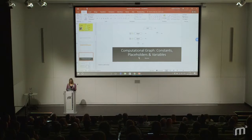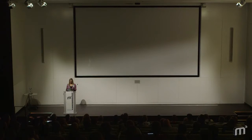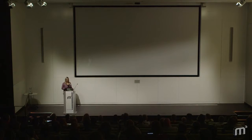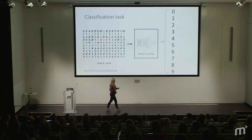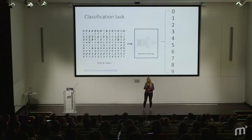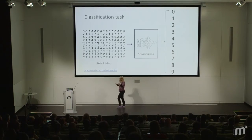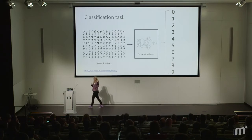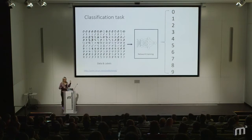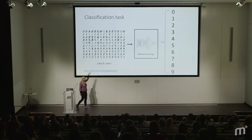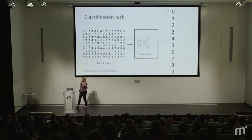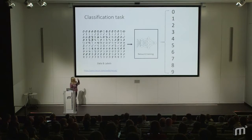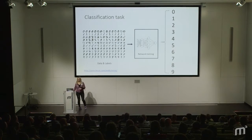So that was a simple example of how to build a computational graph. The next example will be for a classification task — much more concrete. If you've ever encountered deep learning, the MNIST dataset is one of the Hello World examples. We have handwritten digits and want to classify them into 10 classes — digits from zero to nine. We'll build a network and try to classify them.